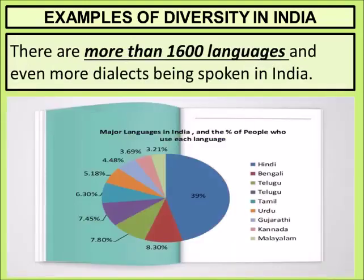There are more than 1600 languages and even more dialects being spoken in India. Dialects means regional languages spoken in a very small area. In languages also we are very rich. In many countries they have only one language — English, German, Spanish, or Chinese — but in India we have Hindi, Bengali, Odia, Tamil, Kannada, Malayalam, Punjabi, Haryanvi, and Nepali, among many more.